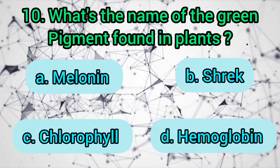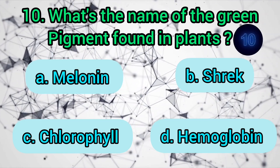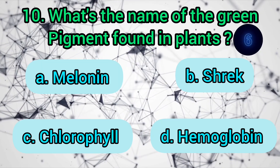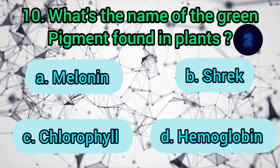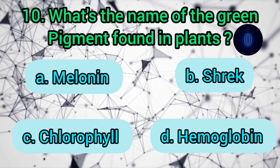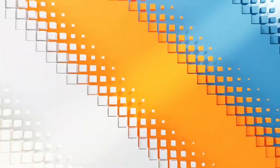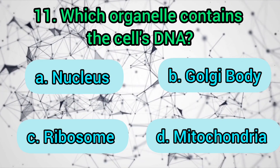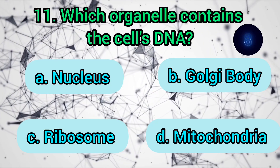Which of these isn't a vertebrate? Fish, butterfly, crocodile, or mouse? What's the name of the green pigment found in plants? Melanin, shift, chlorophyll, or hemoglobin? The answer is: chlorophyll. Which organelle contains the cell's DNA? Nucleus, Golgi body, lysosome, or mitochondria? The answer is: nucleus.